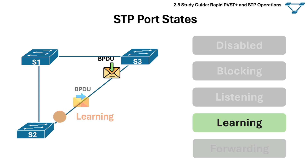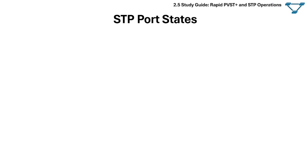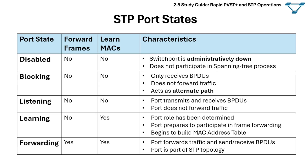The forwarding state is the active state where the port can both forward user traffic and process BPDUs. Only root ports and designated ports can reach the forwarding state. This table summarizes all spanning tree port states.